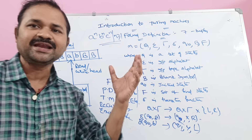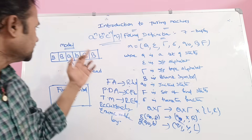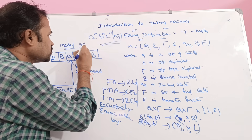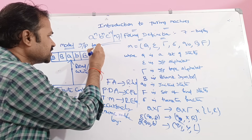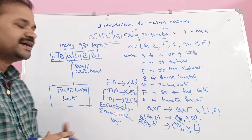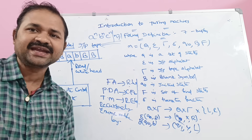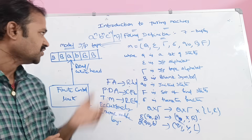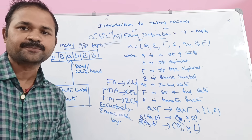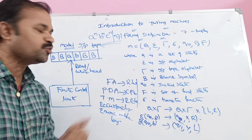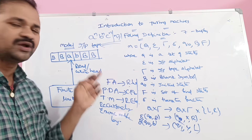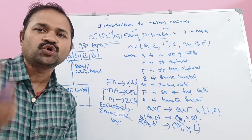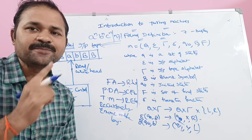Any Turing machine mainly contains three components. The first component is the input tape. The second component is the read/write head. The third one is a finite control unit. The input tape is divided into a number of cells where each cell can store one symbol at a time.